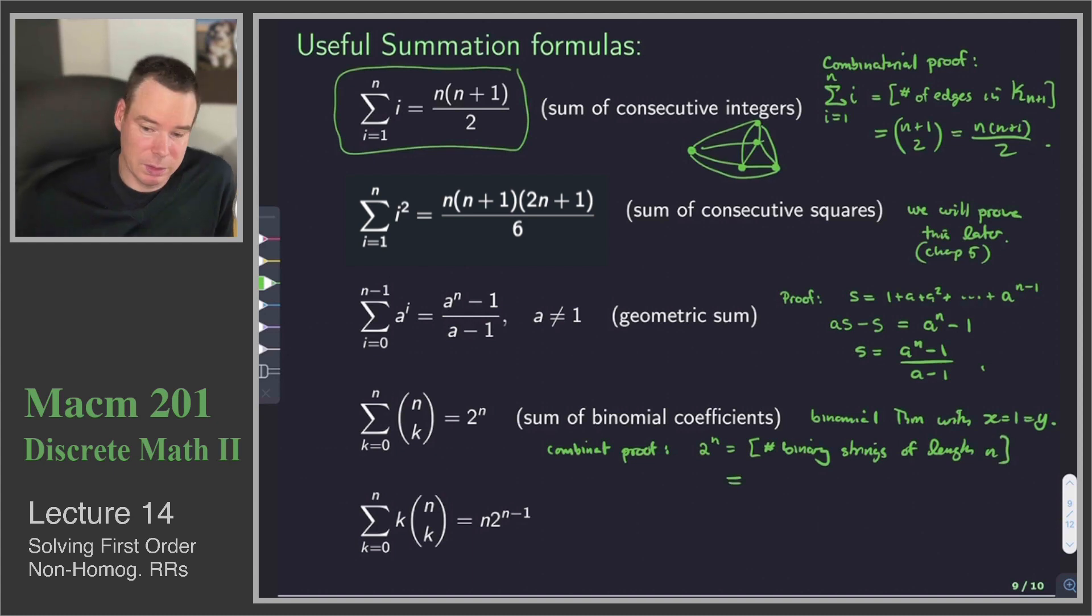But we can count binary strings of length n as follows. How many binary strings are there with, let's say, 0 ones? Well, there's n choose 0 of those. How many binary strings are, so we'll go n choose 0. How many of them have 1 one? Well, there's n choose 1 of those. Just pick the place you want it to go, and then the rest have to be 0s. How many have 2 ones? n choose 2. All the way up to, how many have n ones? n choose n. And there we go. We've just counted the same collection of objects, namely binary strings, in two different ways.